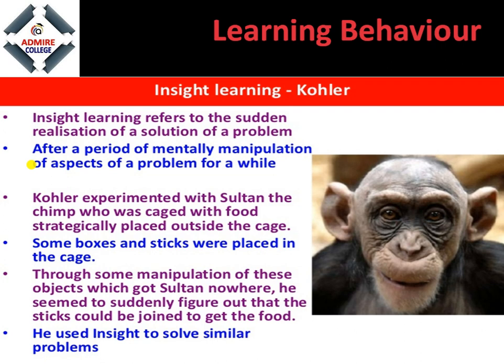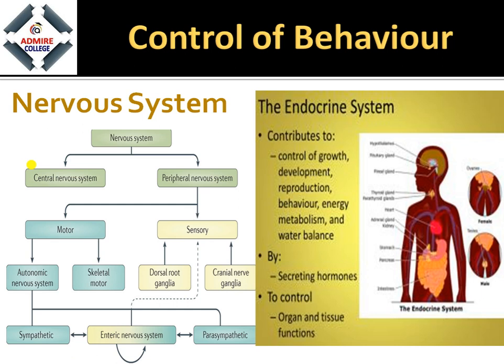Next is insight learning, which also occurs in human beings and in monkeys and chimpanzees. Köhler explained this — according to him, animals first think and deliberate, and then perform the action. This is what we call insight learning.